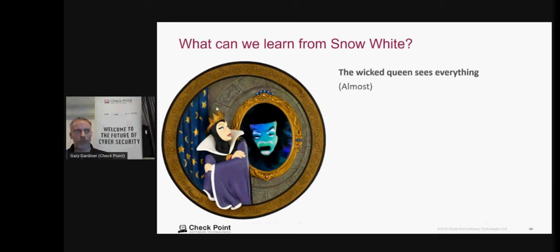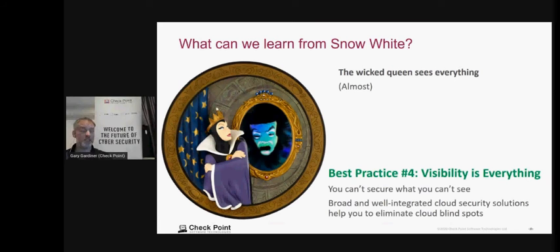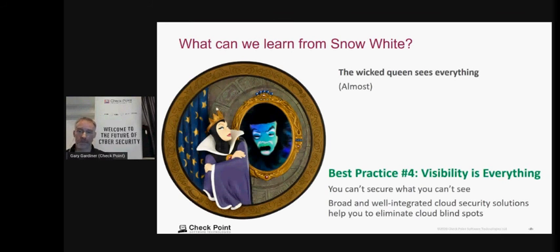Changing tack — what can we learn from Snow White? The wicked queen could see everything through her mirror. It's exactly the same in the cloud: visibility is everything. If you don't know what's happening, you can't secure it because you can't see it. With security posture management, you need the capability to understand real-time activity because workloads are created and torn down very quickly, DevSecOps teams are making changes dynamically, and you need something broad and well-integrated to eliminate blind spots.